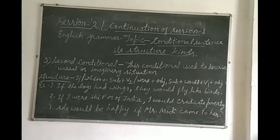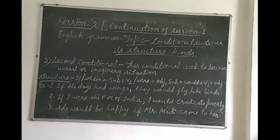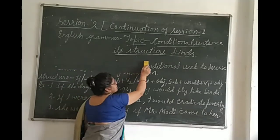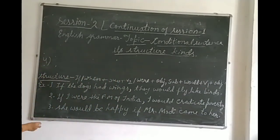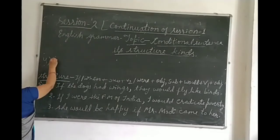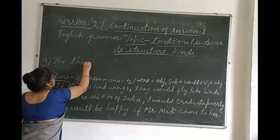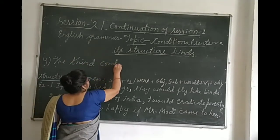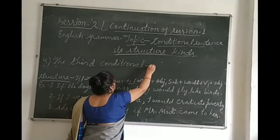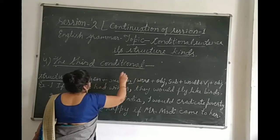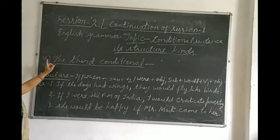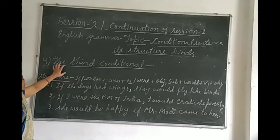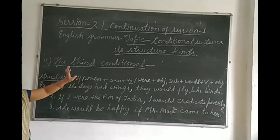Now we will cover the fourth part of the conditional sentence. The fourth kind of conditional sentence is the third conditional. Don't get confused here either — this is the fourth kind, but the name is third conditional. It is also known as type 3 conditional sentence.